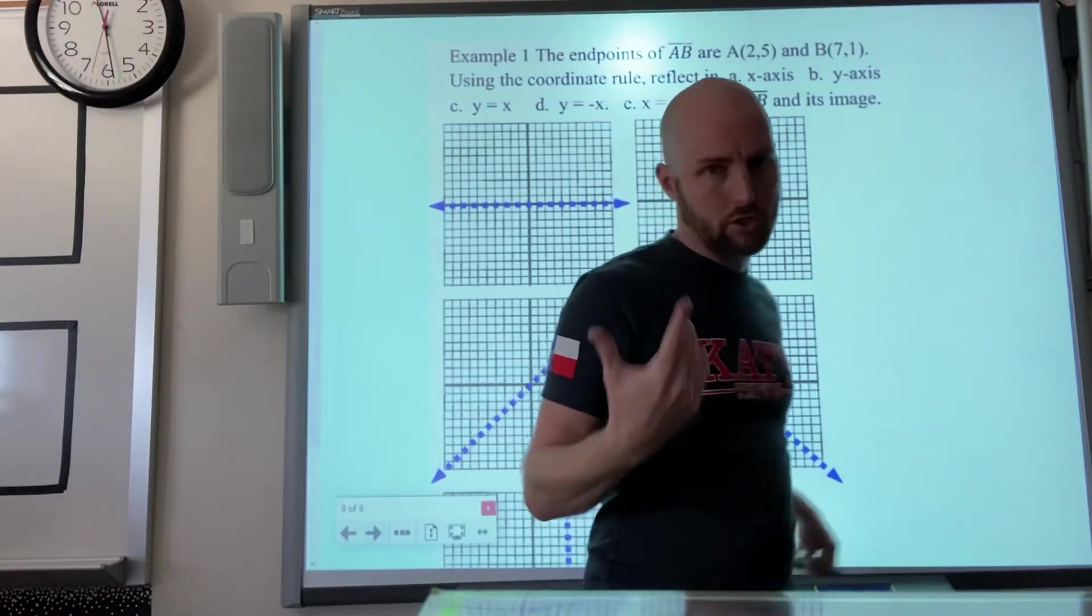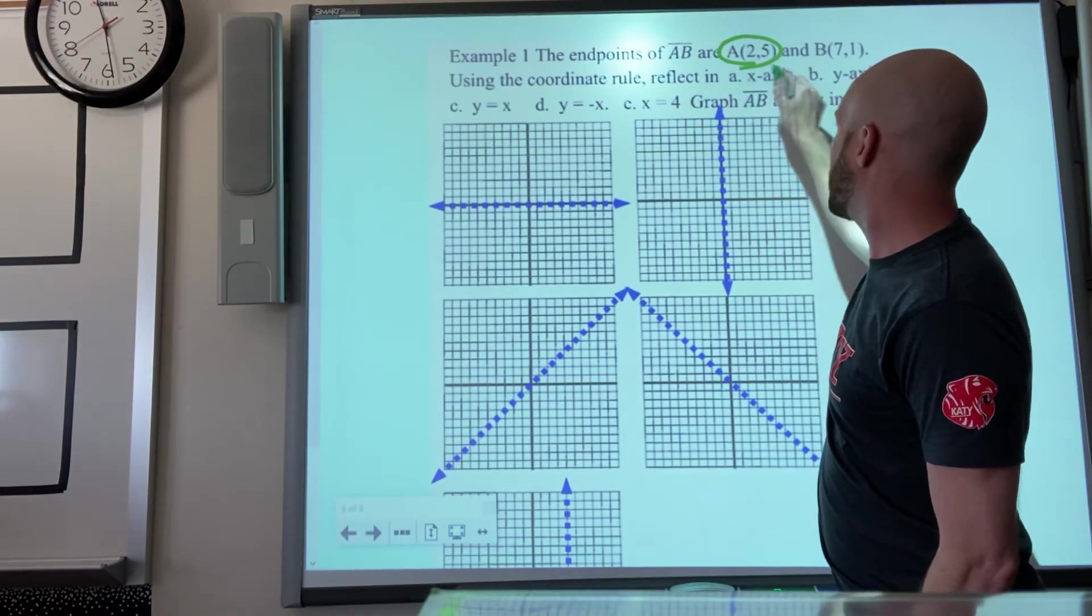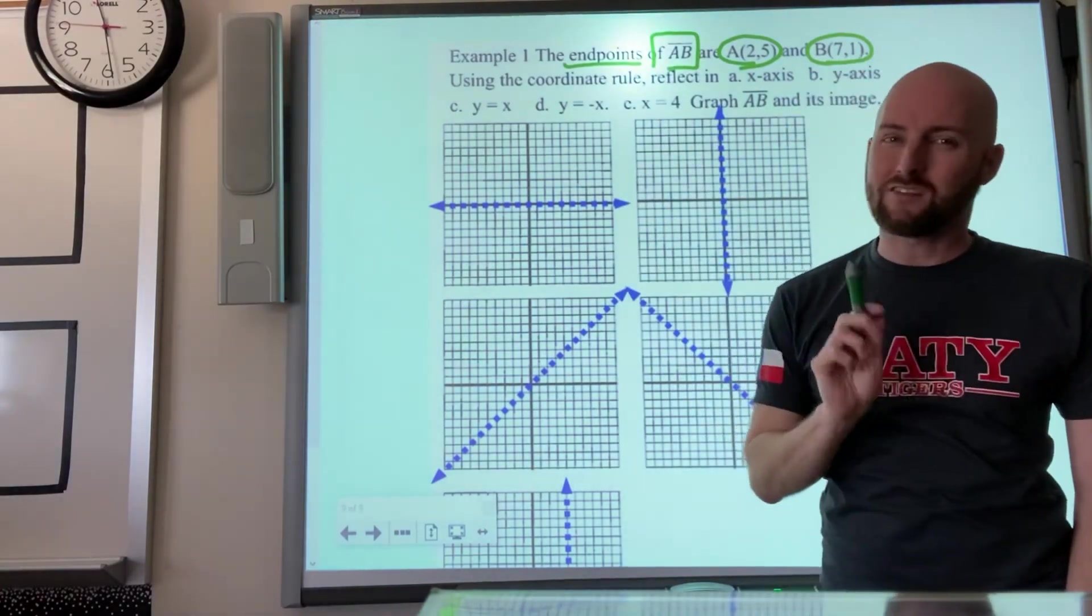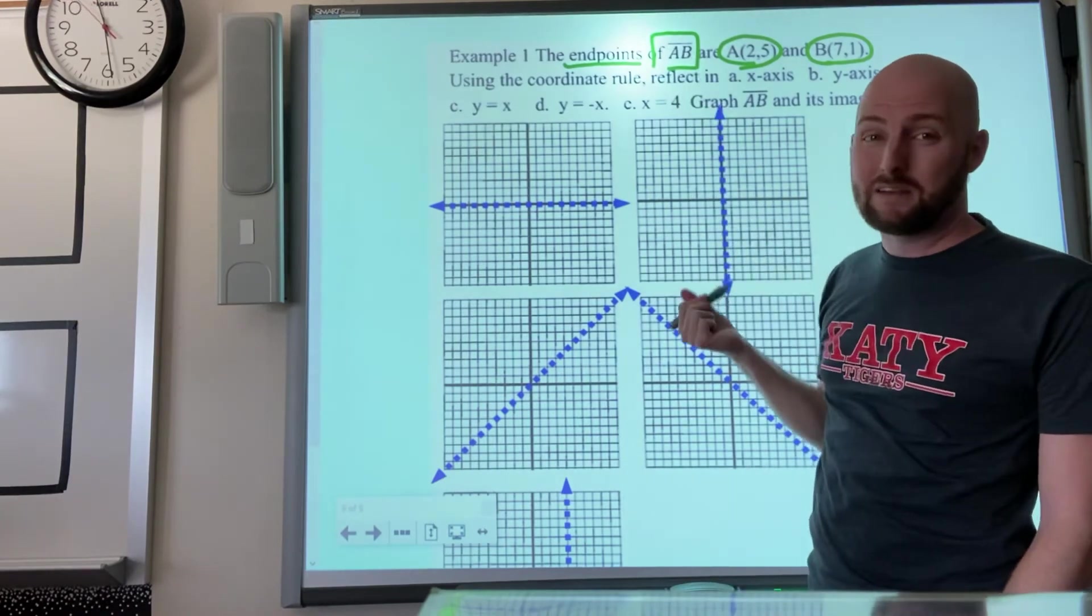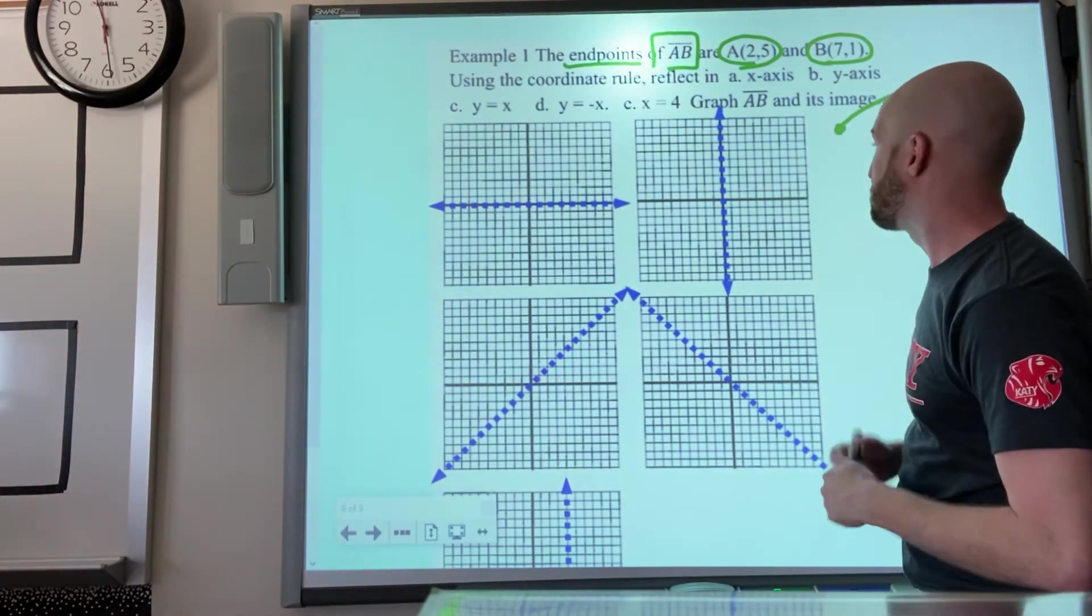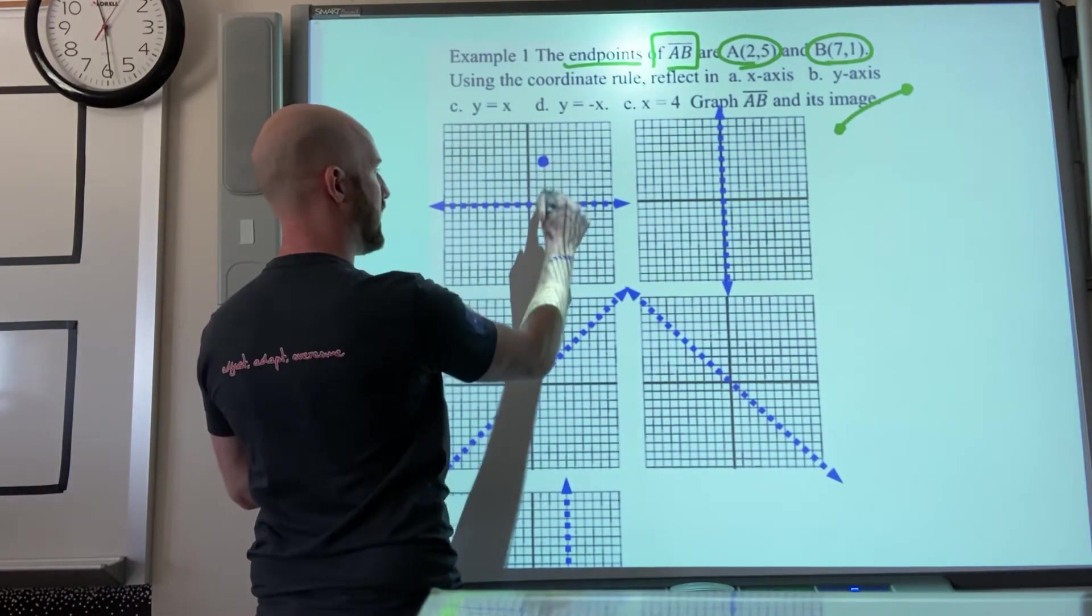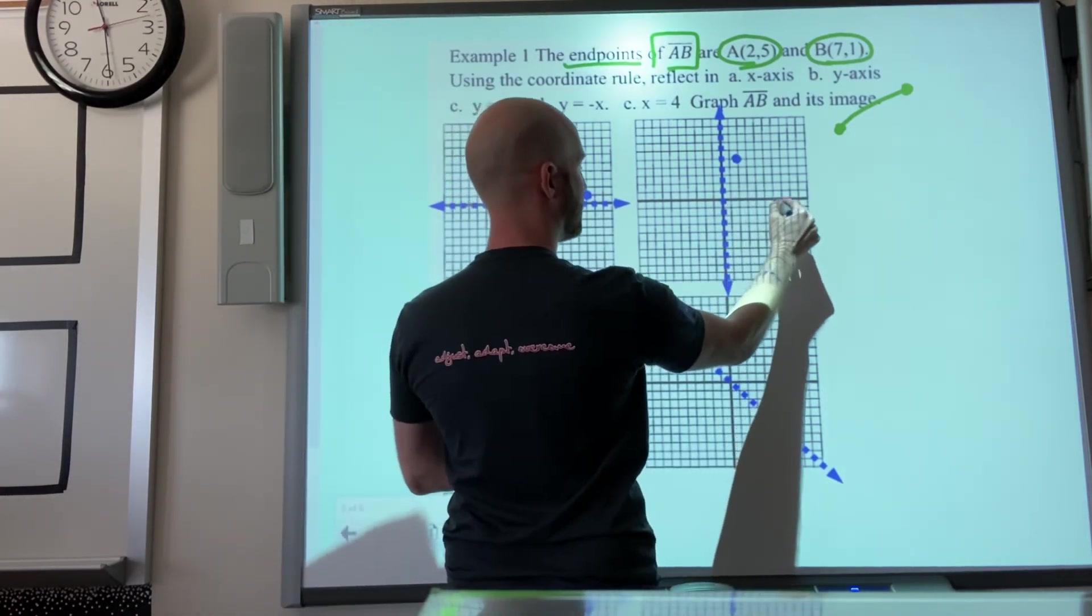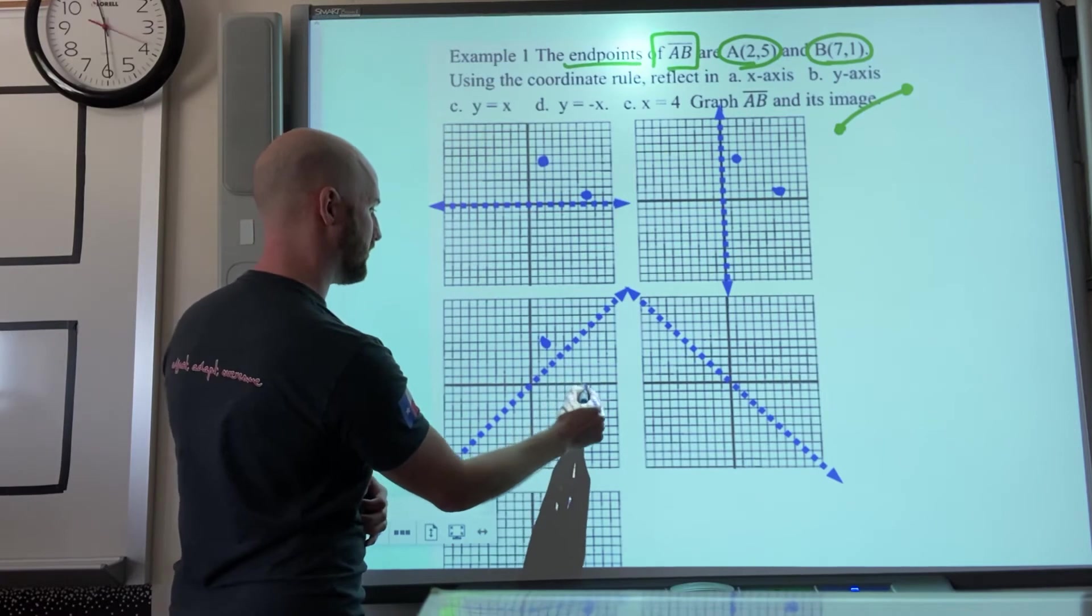So last example, I'll actually do one on a grid just to show you different things that could happen. Let's reflect. It's looking for points A at 2, 5 and B at 7, 1. It says they're the endpoints of segment AB. The little bar on top means it's a segment AB, so I'm not just going to draw the two points, I will also connect them as a chunk of line. So the original points are 2, 5 and 7, 1.